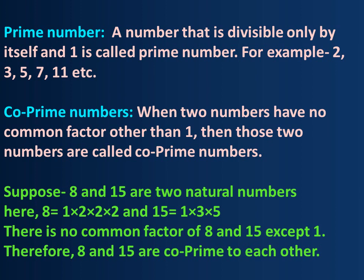A coprime number: when two numbers have no common factor other than one, then those two numbers are called coprime numbers. For example, suppose 8 and 15 are two natural numbers. Here 8 equals 1×2×2×2 and 15 equals 1×3×5. There is no common factor of 8 and 15 except 1. Therefore, 8 and 15 are coprime to each other.